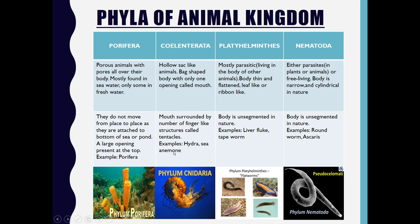The third phylum is Platyhelminthes. Most of the organisms under this phylum are parasitic — either living inside the body of the host organism or outside it. Their body is thin, flattened, and leaf-like or ribbon-like. Mainly their body is unsegmented in nature, but exceptions exist — for example, the tapeworm has a segmented body. Examples of Platyhelminthes are liver fluke and tapeworm.